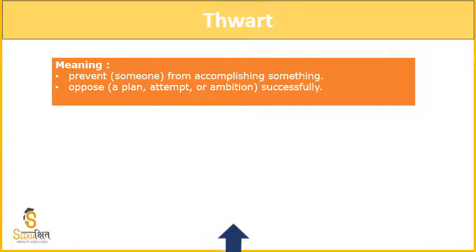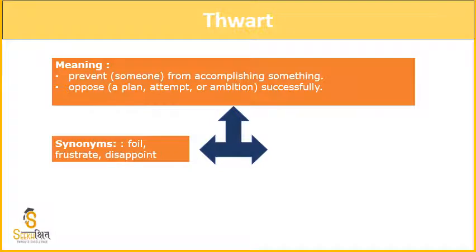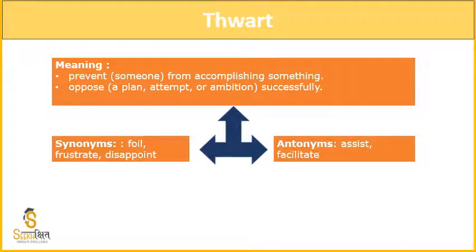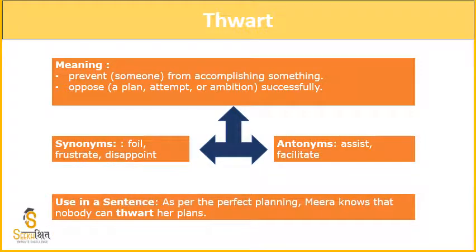Iske synonyms dekh lete hain: foil, frustrate, disappoint. And antonyms mein aayega: assist, facilitate. Assist karna kisi cheez ko sahara dena — kisi cheez ko karne ke liye jaise mein assist karti hoon. Foil, frustrate, disappoint — means if I do a work and someone comes and gives it rog de because of force. Abhi corona virus ki jaisi bahut saare businesses ruke hain — toh wo saare businesses thwarted hain because of coronavirus. Use in sentence: 'As per the perfect planning, Meera knows that nobody can thwart her plan' — ki Meera ek ladki hai usne bahut perfect planning ki hai and she is very much confident that nobody can stop her plans.